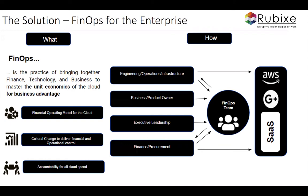The FinOps team is like a task force consisting of people from engineering, operations, and infrastructure — the IT guys and developers — along with business owners and product owners, executive leadership such as the CTO, CIO, or CEO, and the finance department. All these people together form the FinOps team, and they collectively attack cloud spend and optimize it.